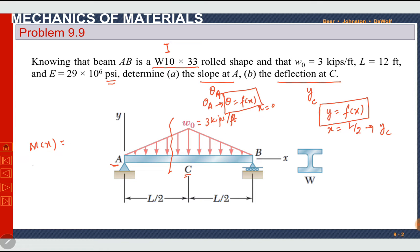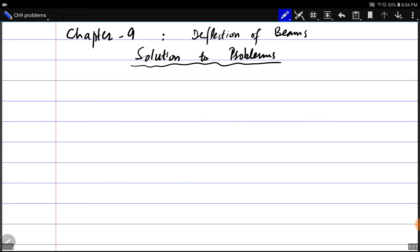We can solve this problem using different methods. The same problem was solved in the theory part as an example using singularity functions. Now I want to section this beam between A and C, find the moment function as a function of x between A and C. We only need that function between A and C because we need θ at A and y at C, so that function is sufficient. We will find the moment function, then integrate it twice to find θ and y.